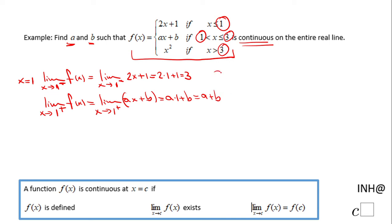Now these two need to be equal, so a plus b equals 3 because we want the function to be continuous. So that is one equation. We can move to the second part, and for that reason we're going to use x equals 3.